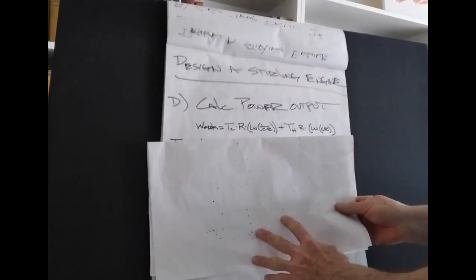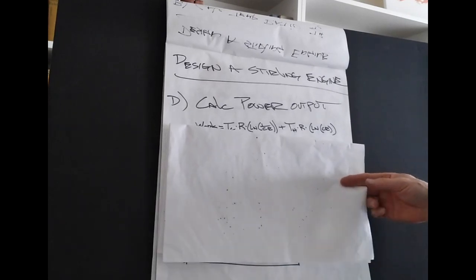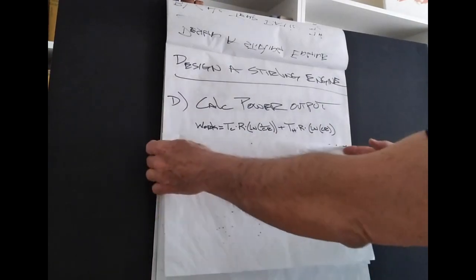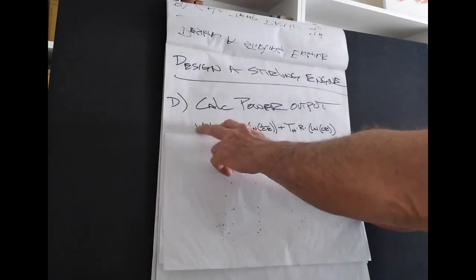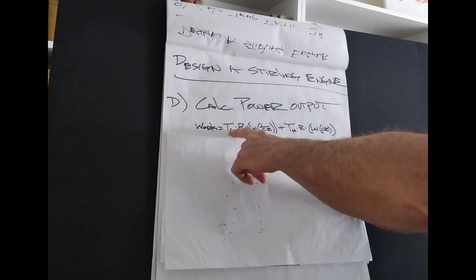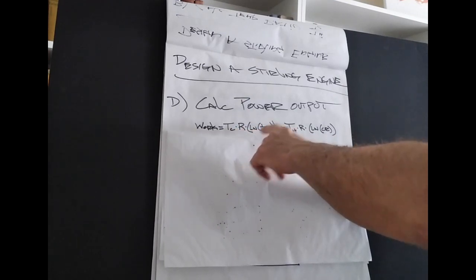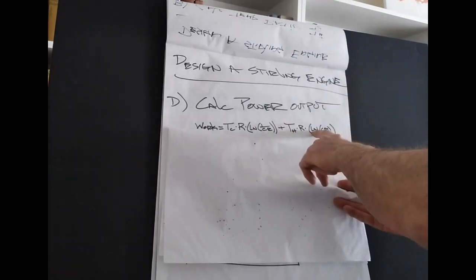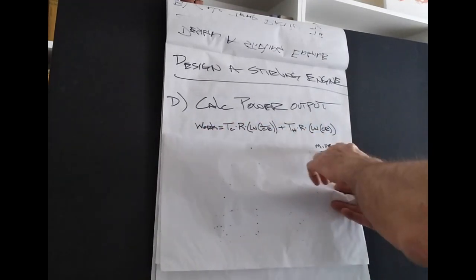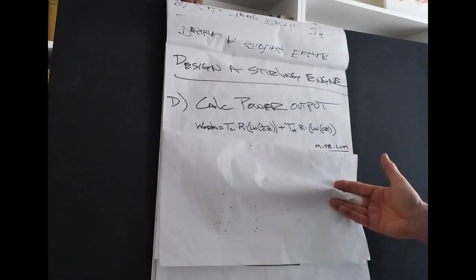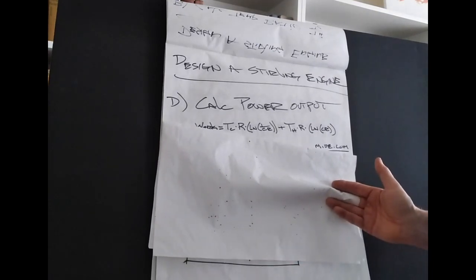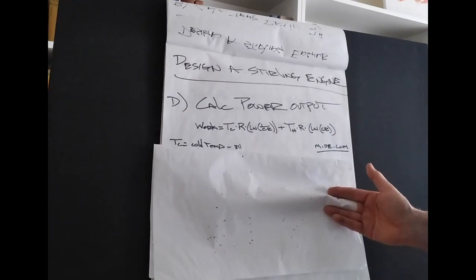All right. Now we have our temperature ratio. We have our compression ratio. Now we can calculate the power output of our engine. With just those three pieces of information, we can calculate what the power is of that engine. So to calculate, we'll use this particular equation, which is basically the work of the engine cycle is equal to the temperature cold times the gas constant R times the natural log of 1 over compression ratio, plus temperature hot times R times the natural log of the compression ratio. And once again, this equation, I've taken it from a MIDE.com website. Great resource. Good information. They have an actual calculator on there if you want to calculate, just put in inputs and have a computer spit out the answer.